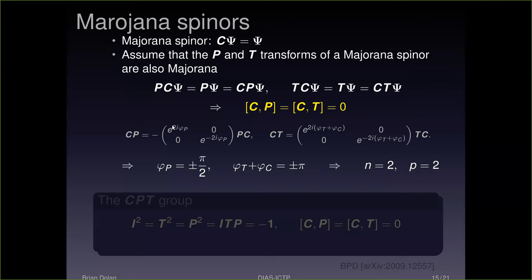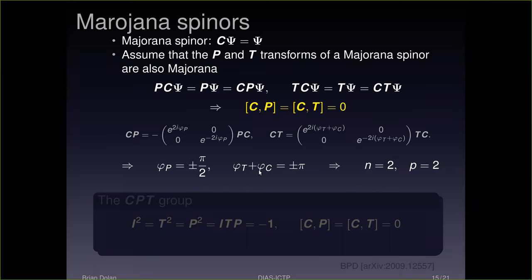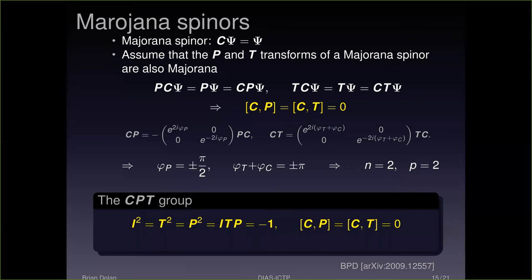If we make the additional assumption that parity and time reversal preserve the Majorana property — the parity transform of a Majorana spinor is also a Majorana spinor, and the time reverse of a Majorana spinor is also a Majorana spinor — then we immediately conclude that C must commute with P and C must commute with T. Demanding that charge conjugation, parity, and time reversal preserve the Majorana property of four-dimensional Dirac spinors, the two integers n and p are completely constrained. The only group we're left with is the quaternion group. Everything else is thrown out.